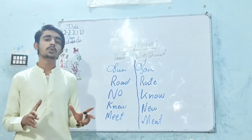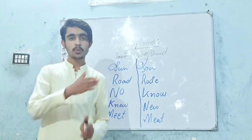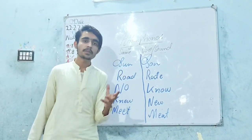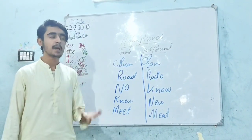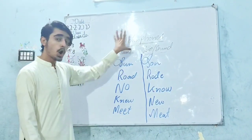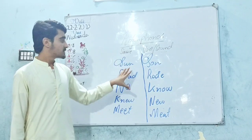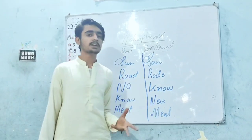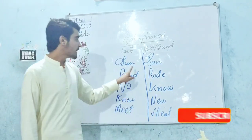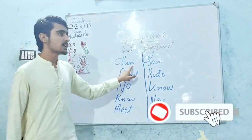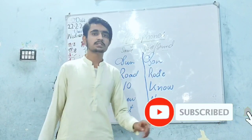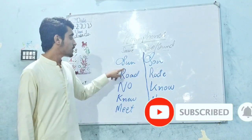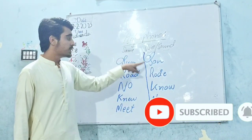They are just sounding the same. Those types of words that sound the same but have different meanings and different spellings are called homophones. For example, we can make a sentence with sun: 'The sun rises from the east.' Here I am talking about suraj — the sun in the sky.